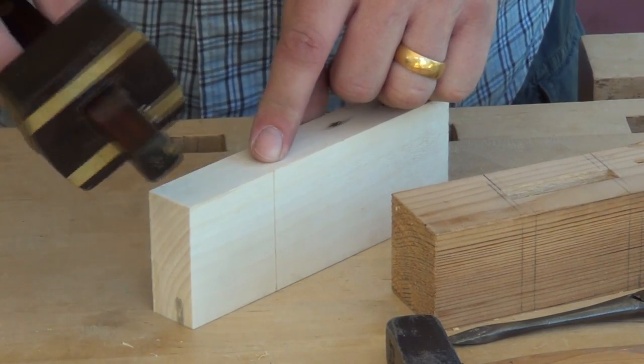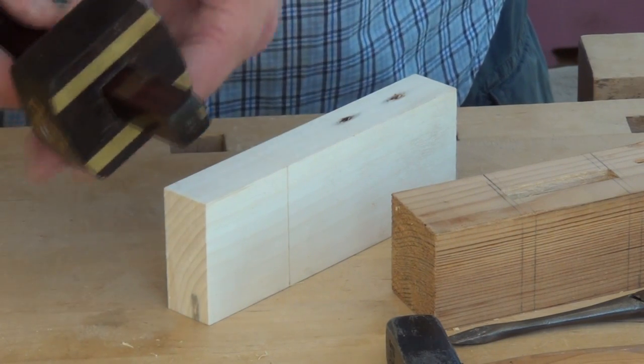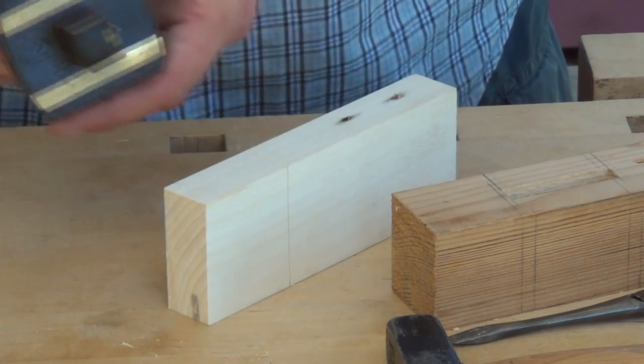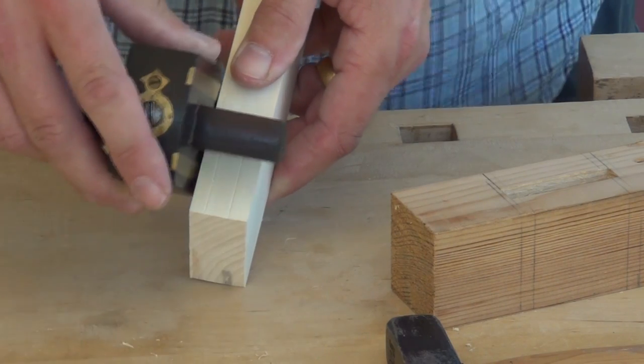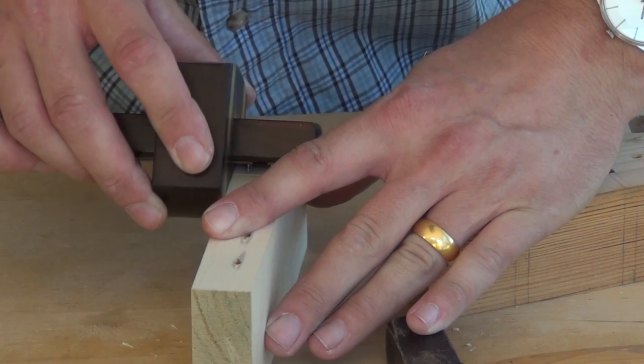Having knifed the shoulder line round, we then use the mortise gauge. Just readjust the fence to put our tenon where we want it. I'm just going to do it in the middle on this one. Just remember to reference the fence off the same face every time.